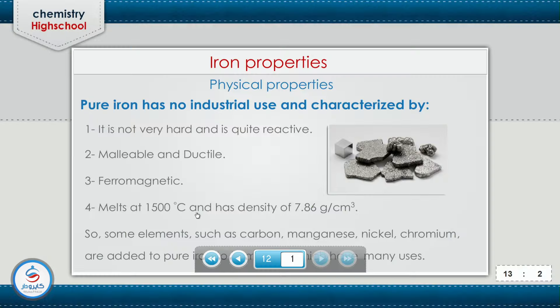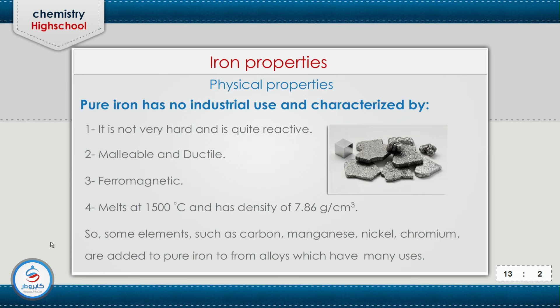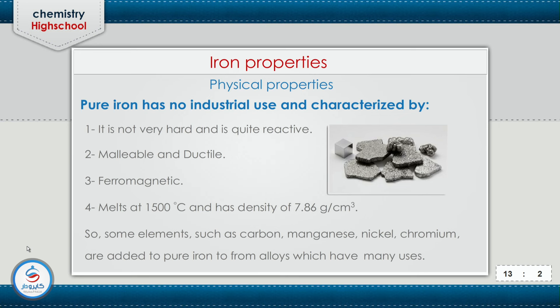So the physical properties of iron are: it's not very hard and it's quite active; it's malleable and ductile; iron is ferromagnetic; iron melts at 1,500 degrees centigrade and has density of 7.86 g/cm³. Some elements such as carbon, manganese, nickel, and chromium are added to pure iron to form alloys which have many uses.